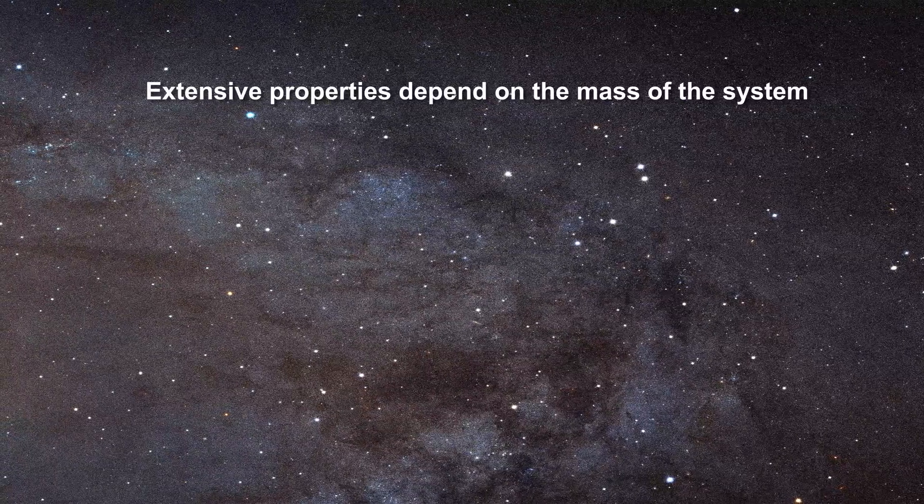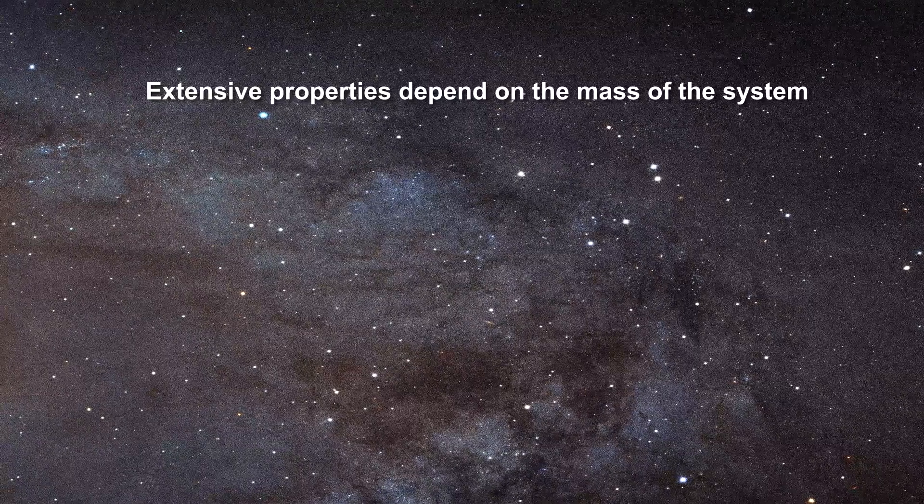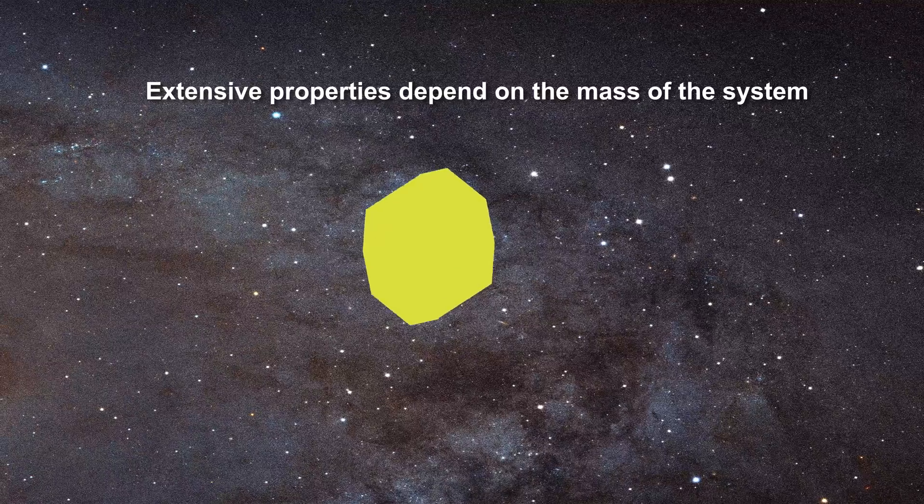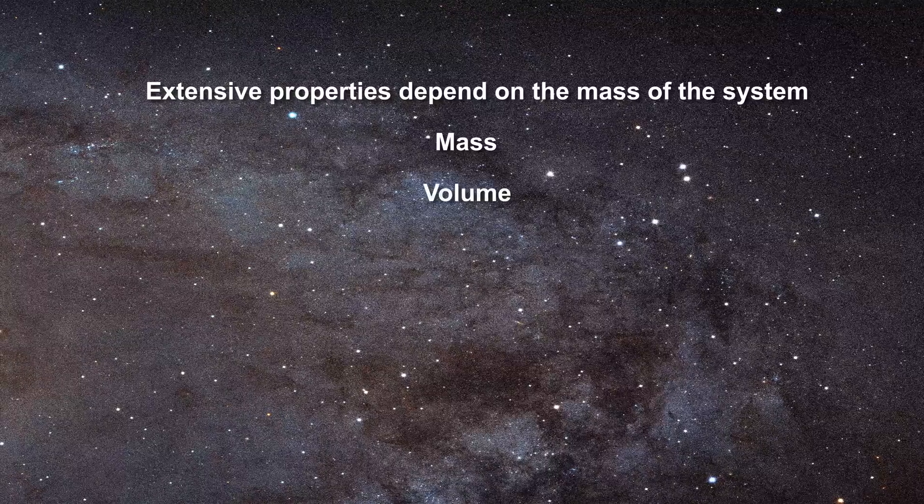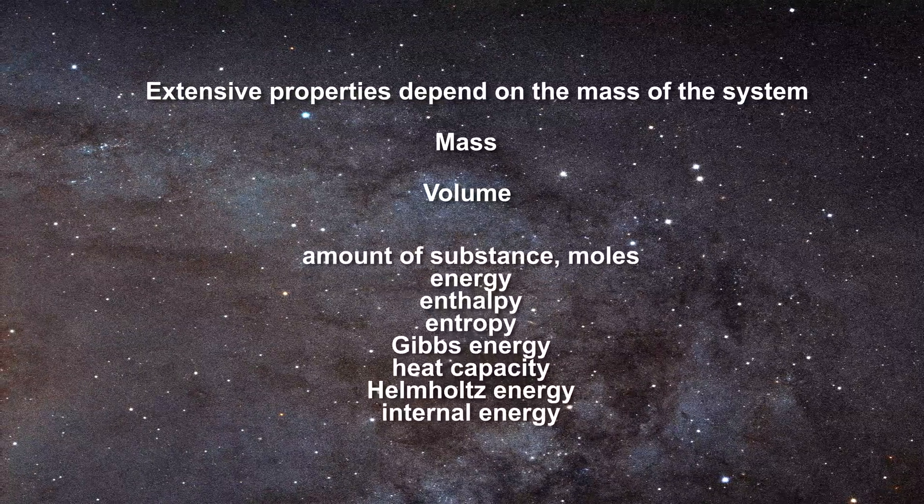Conversely, extensive properties in thermodynamics are always related to the amount or mass of an object. As the mass of a system changes, so must any extensive property. Other than mass, volume is the most common extensive property, but there are many others as we can see here.